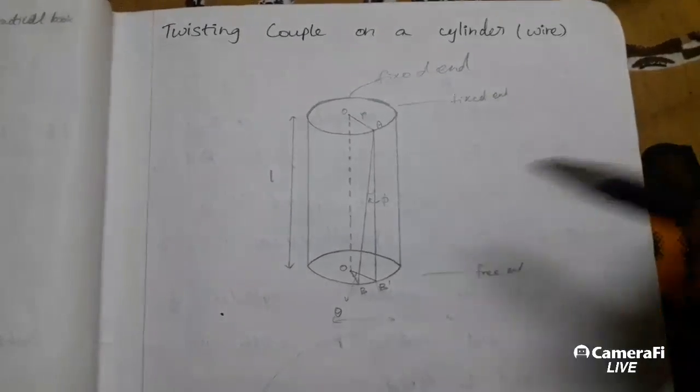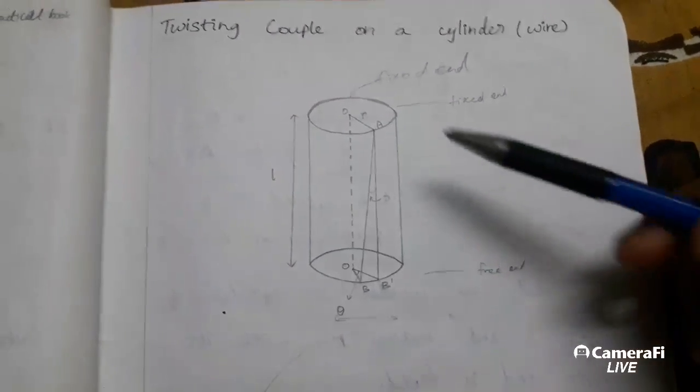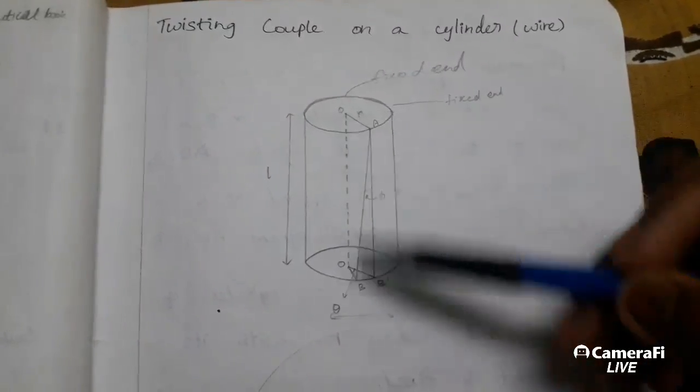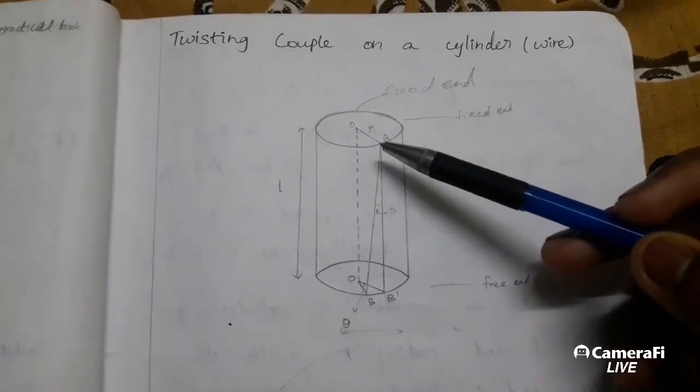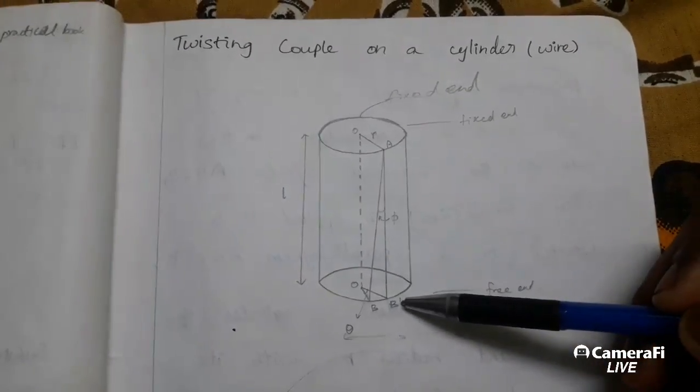So let us consider a cylindrical object of height or length L. Two points are there, O and O prime. A section has been taken, the points are A, B, and B prime.